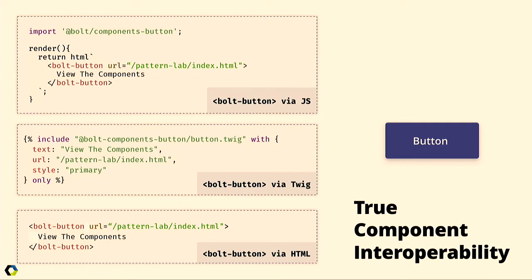With this approach, you get true component interoperability. You get all the power of modern JavaScript-powered components in the browser while still having cross-interoperability between different languages — things like Twig, HTML, and JavaScript all sharing one single source of truth from different angles. This allows you to package up your HTML for developers, designers, and content authors that can customize and use without interfering in design system updates.